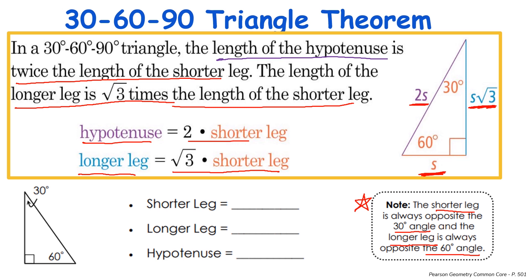Let's label the figure in more depth. We see this is a 30 degree angle, so opposite that would be my shorter leg — I'll call that x. My longer leg is opposite the 60 degree angle and equals the square root of three times x. My hypotenuse, always opposite the right angle, is two times x. Note that the shorter leg is always half the length of the hypotenuse.